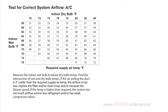I assume you have performed the test for correct system airflow and the results were lower than the chart specified. If not, watch the tutorial titled 'How to Calculate Correct System Airflow Through an Air Conditioner.' If the delta T is too low, the primary causes are as follows.